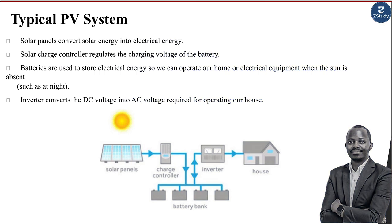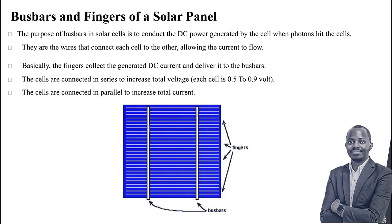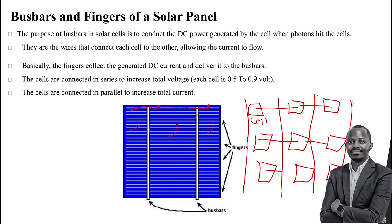A typical PV system looks as follows. The cells are connected in series to increase the total voltage. As you know, voltage in series is a multiple — this cell connects to a cell and then connects to a cell.